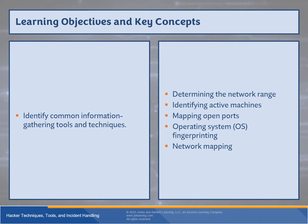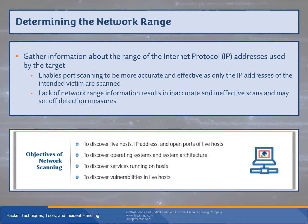When we determine the network range of a particular organization, we're trying to gather information about what IPs it uses. These may not necessarily be contiguous, but they usually are. This means that port scanning is going to be more accurate and effective because we're only scanning the IP addresses of the intended victim. It's also computationally much faster, since we're eliminating unnecessary scan ranges. Ineffective scans can also set off detection measures, and certain ports may be acting as honeypots that we can help circumvent by accurately identifying these ranges.